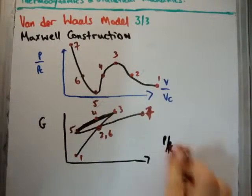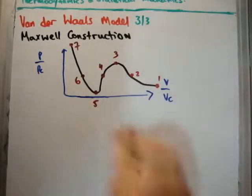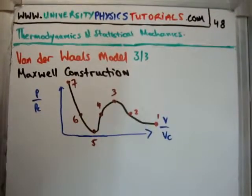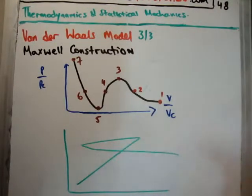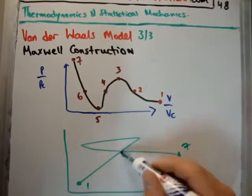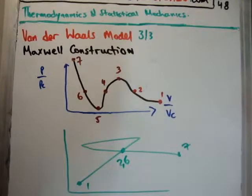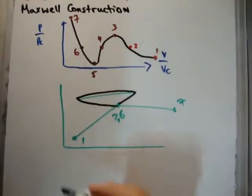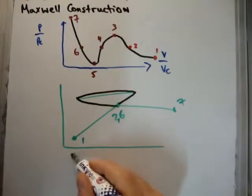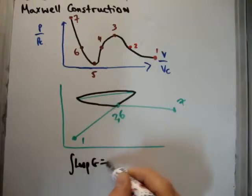So what Maxwell did, and Maxwell was a very smart guy, of course. He came up with this thing called a Maxwell construction. So he tried to work out what the change in the Gibbs free energy is. And we can see, going around to this particular loop, the change in the Gibbs free energy going on that loop is zero. So what we can say is that the integral of the loop of G is equal to zero.